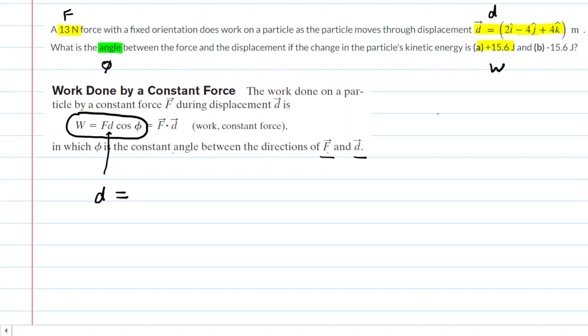The question does not give us the magnitude of the displacement. It gives us the actual displacement vector. This is a three-dimensional vector with an x component of positive 2, a y component of negative 4, and a z component of positive 4. We need to figure out the magnitude, basically how long is that vector.